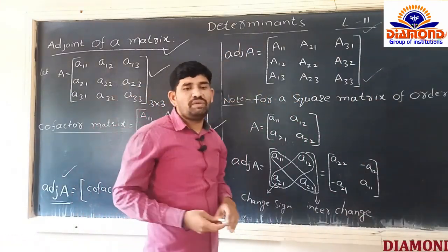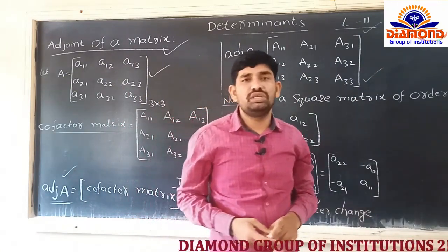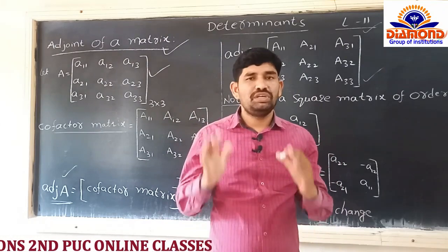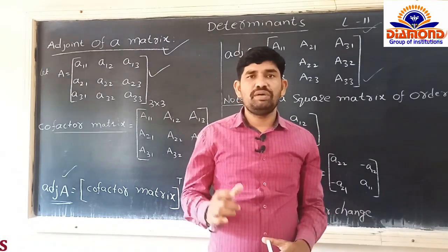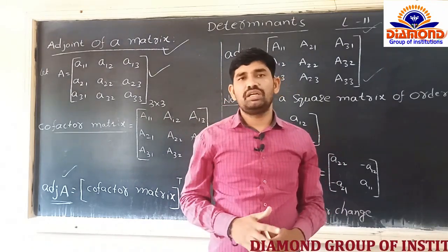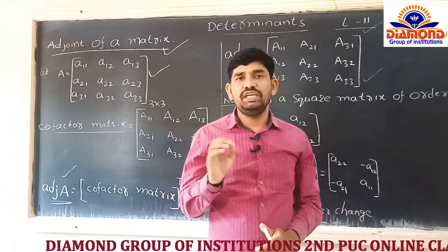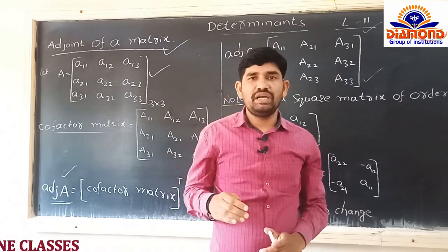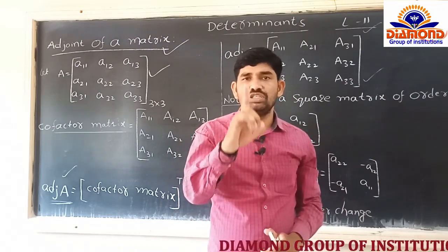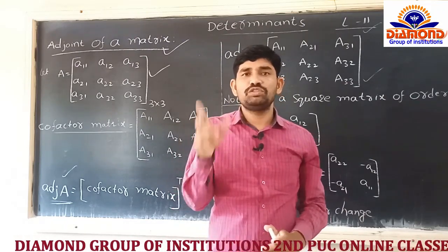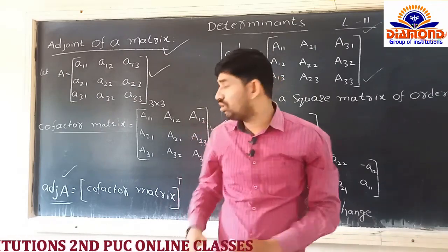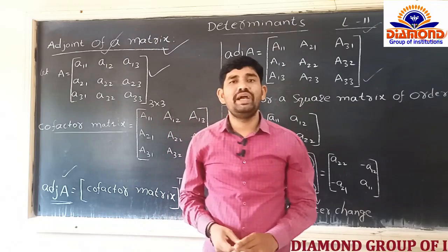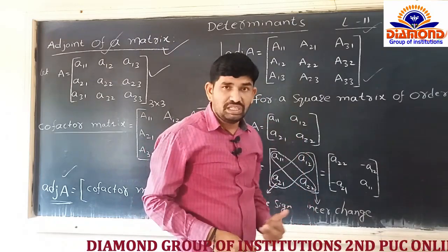To summarize finding the adjoint of a 3x3 matrix: first find the cofactors of each and every element - all 9 elements. Whatever matrix we write after having the cofactors is known as the cofactor matrix. The transpose of the cofactor matrix is the Adjoint of a matrix.